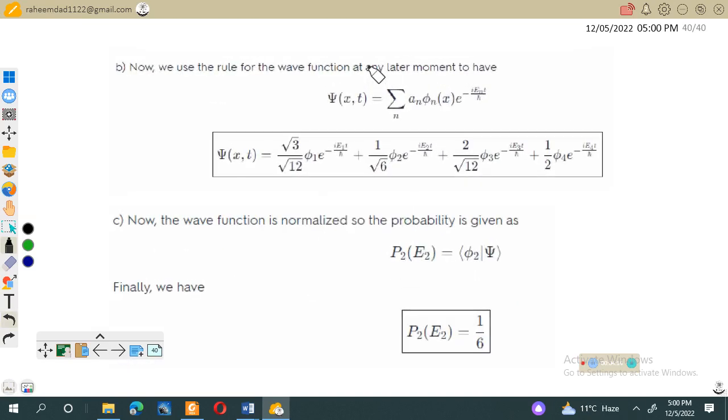In the second part, we have to find the function at later time t. We will use the time-dependent Schrödinger solution, which is ψ(t) = Σ aₙφₙ exp(-iEₙt/ℏ). So a₁φ₁ exp(-iE₁t/ℏ) + a₂φ₂ exp(-iE₂t/ℏ) + a₃φ₃ exp(-iE₃t/ℏ), and we can extend it further.